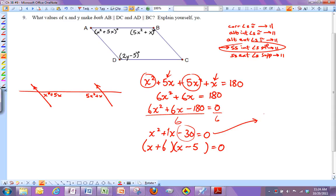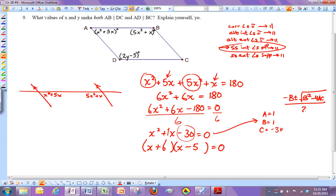And if you're not comfortable using the factoring, you can always use quadratic formula where a is 1, b is 1, and c is negative 30. And so then you're going to plug that into negative b plus or minus square root b squared minus 4ac all over 2a. And those will give you your x's. And you should get the same x's.